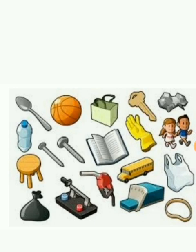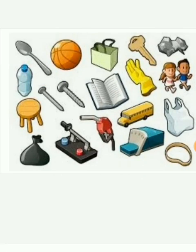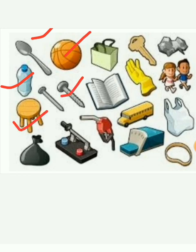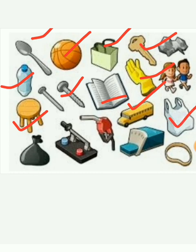What are the objects in the picture? The objects like spoon, water bottle, ball, wooden stool, nail, bag, book, gloves, key, bus, cover or plastic bag, elastic rubber. These are all called as objects.